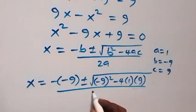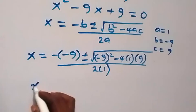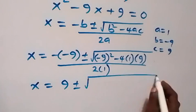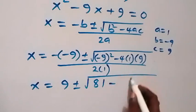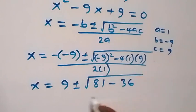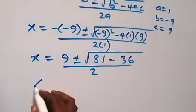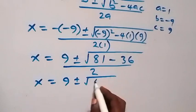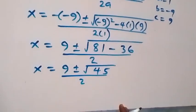When we substitute this, we have x equals to 9 plus or minus square root of 81 minus 4 times 1 times 9. That gives us 81 minus 36, all over 2. So x equals to 9 plus or minus square root of 45, over 2.